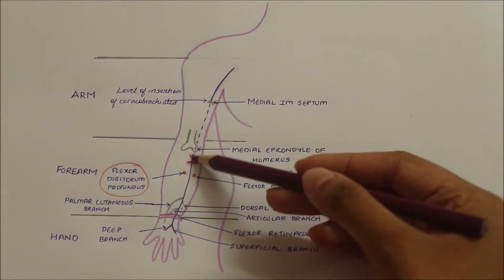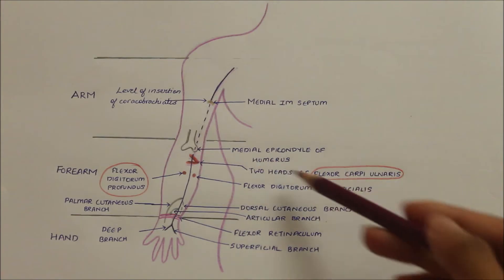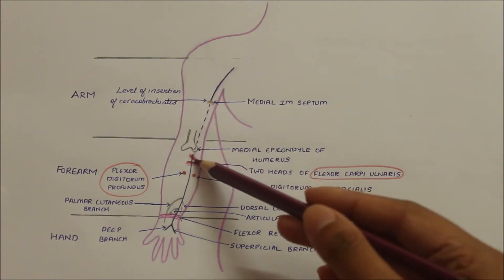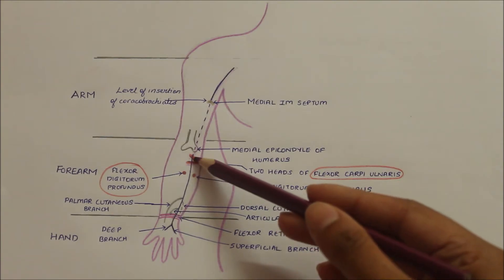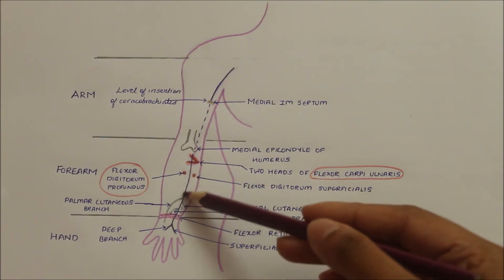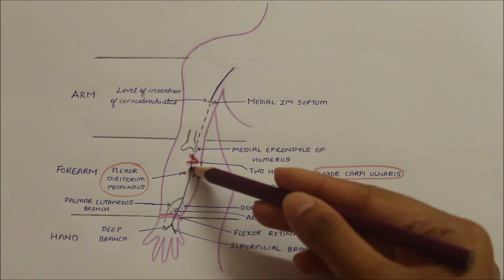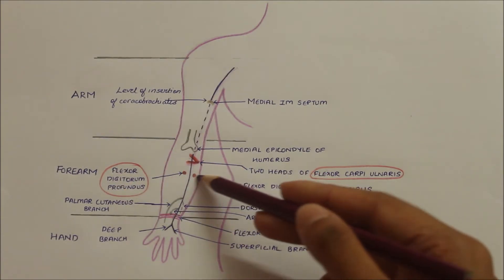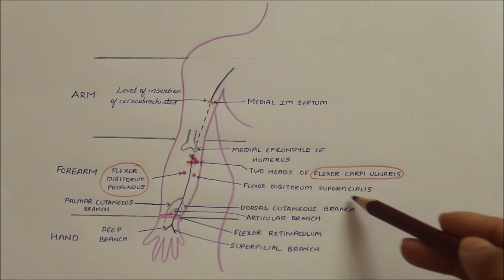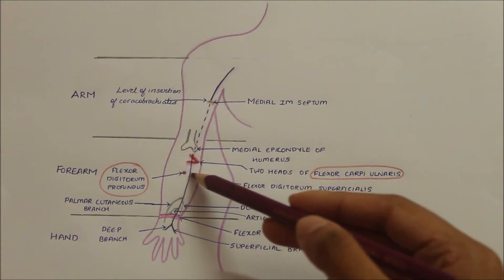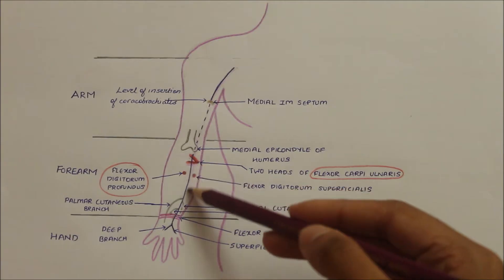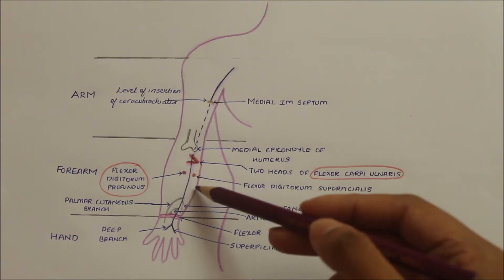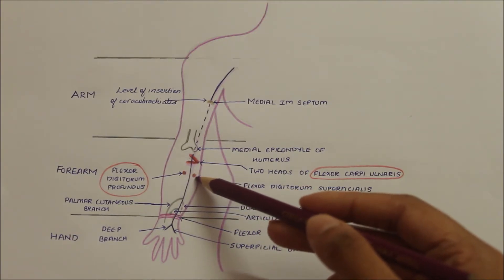The ulnar nerve then passes in between the two heads of the flexor carpi ulnaris, as you can see right here, and enters into the forearm anteriorly. It then passes medially between the flexor digitorum profundus muscle and the flexor digitorum superficialis muscle.